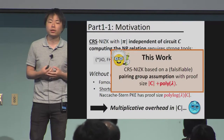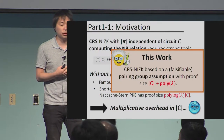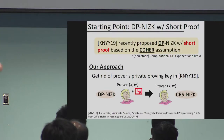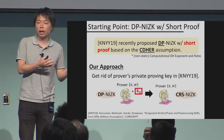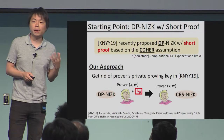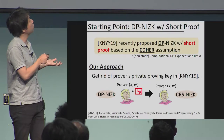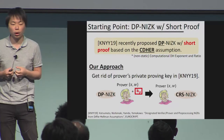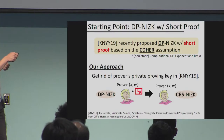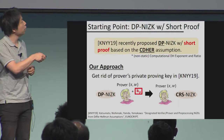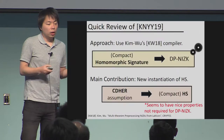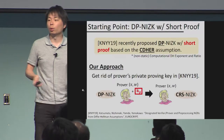That's what we did. We construct the first CRS NIZK based on a falsifiable pairing group assumption with proof size |C| + poly(λ). The starting point is the DP NIZK we proposed at EuroCrypt this year, based on the KNYY19 construction of DP NIZK with short proof size based on the CDHR assumption — a non-static Diffie-Hellman type assumption secure in the generic group model, which is a falsifiable assumption. Our approach converts this DP NIZK into a CRS NIZK by getting rid of the designated prover's private key.